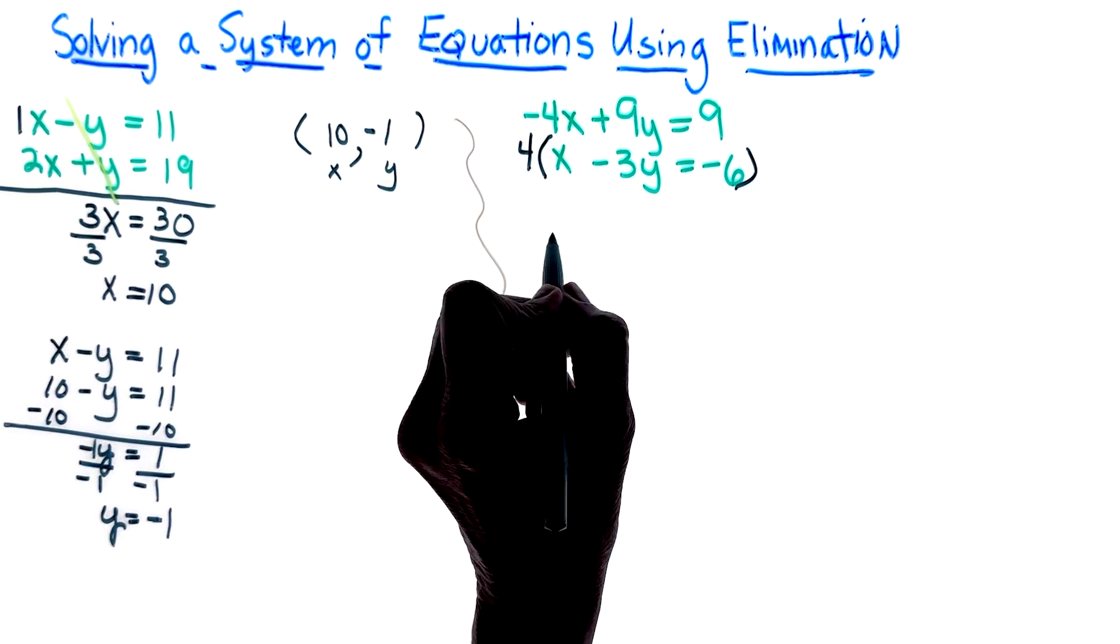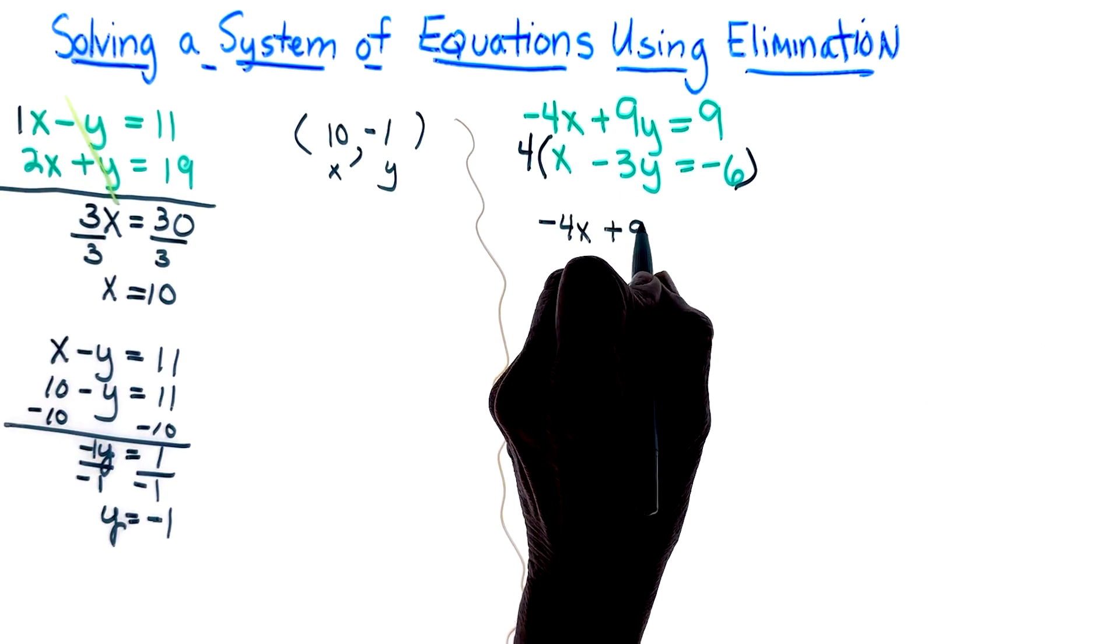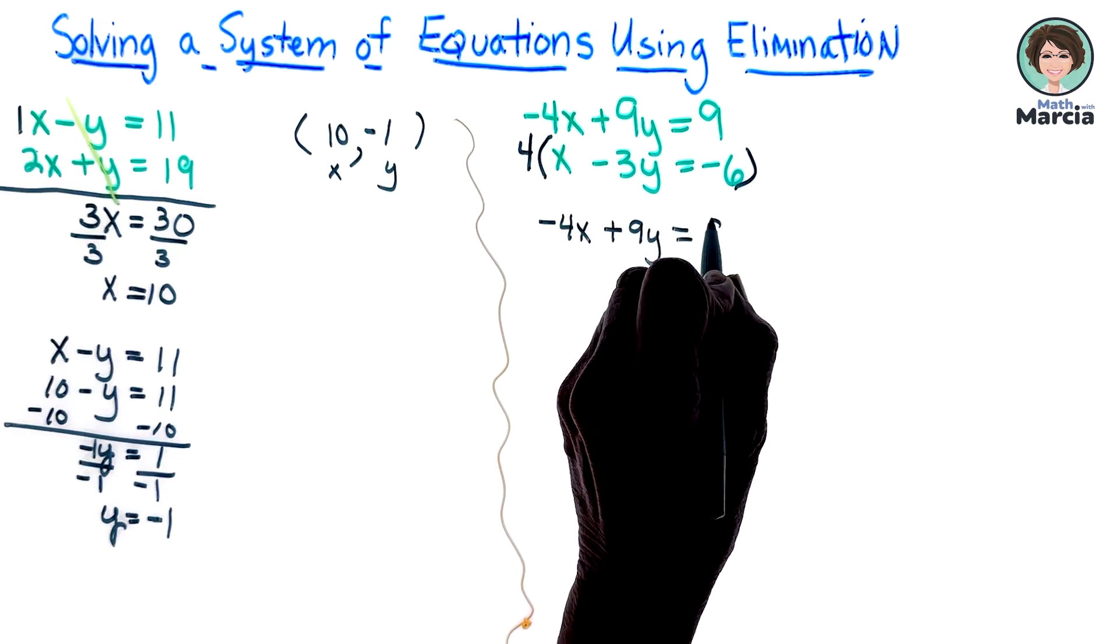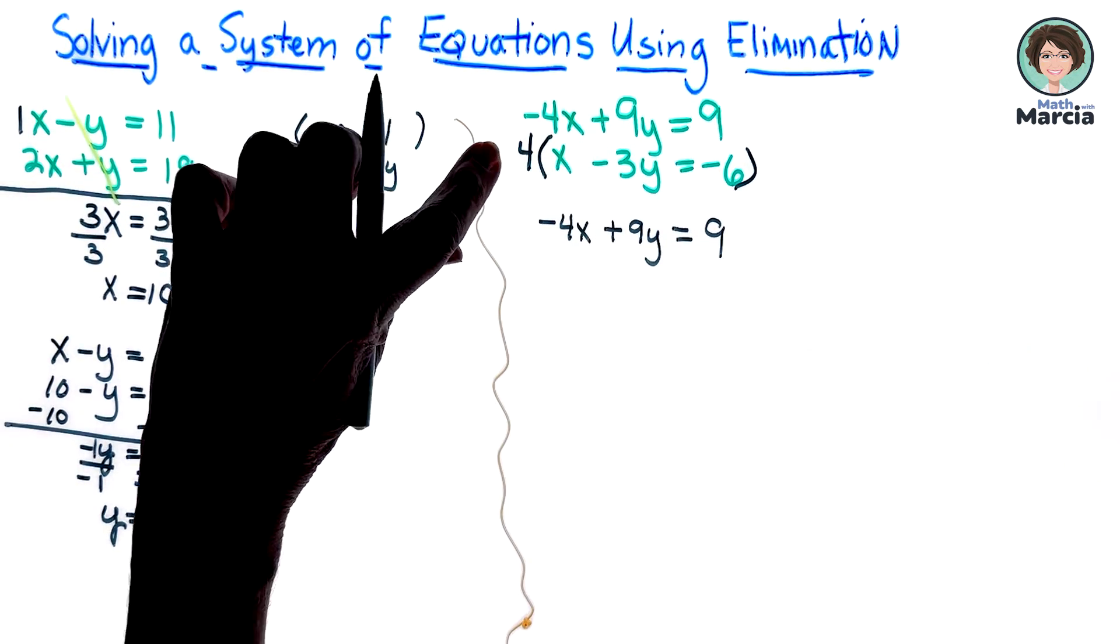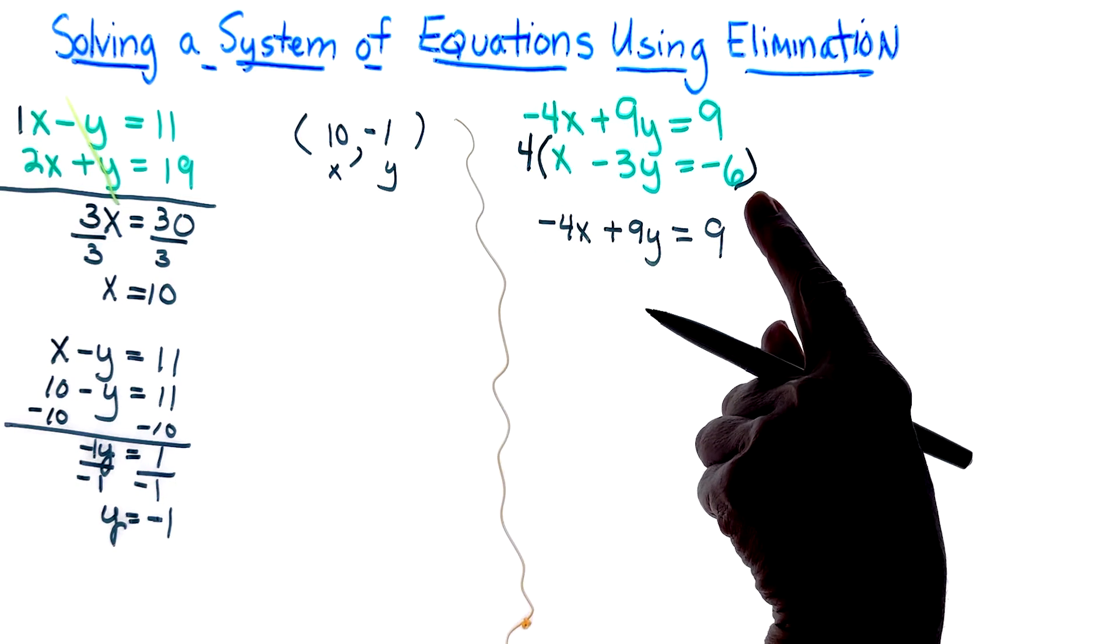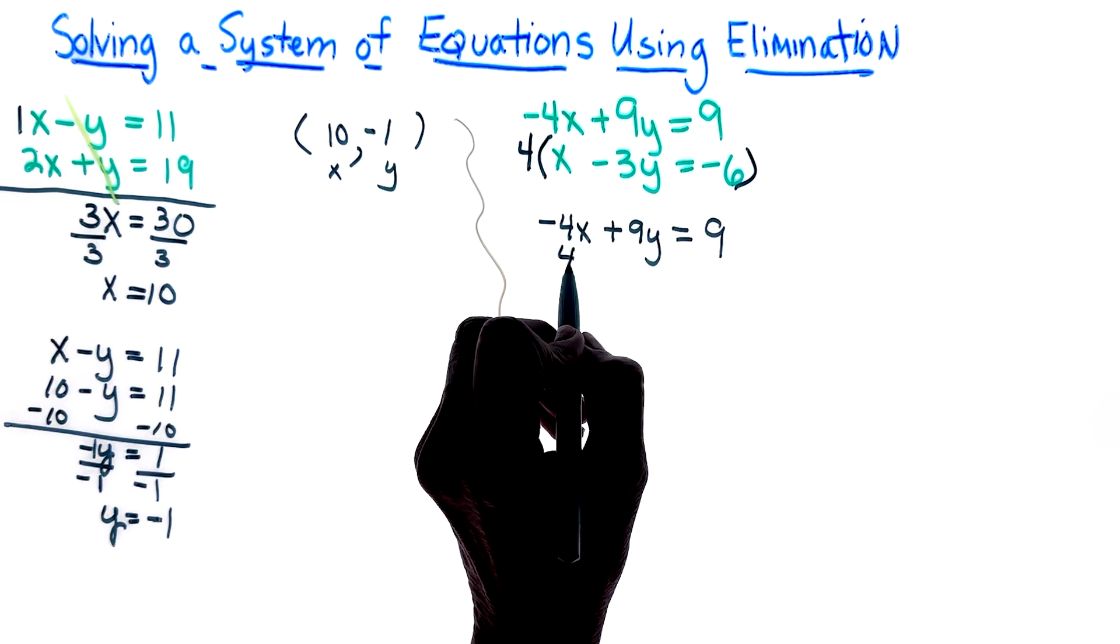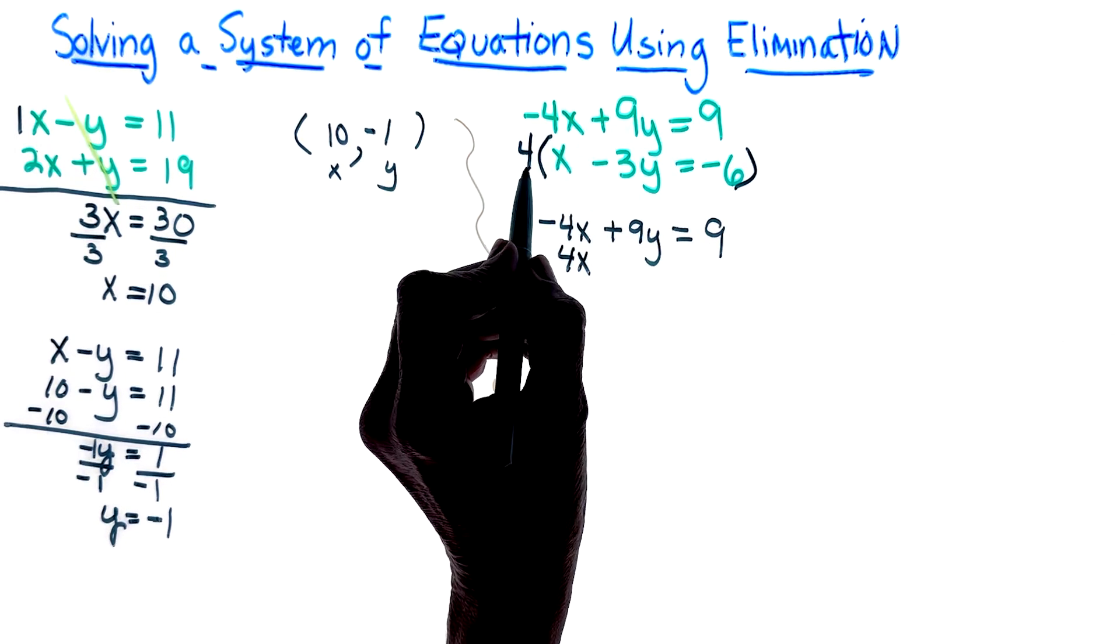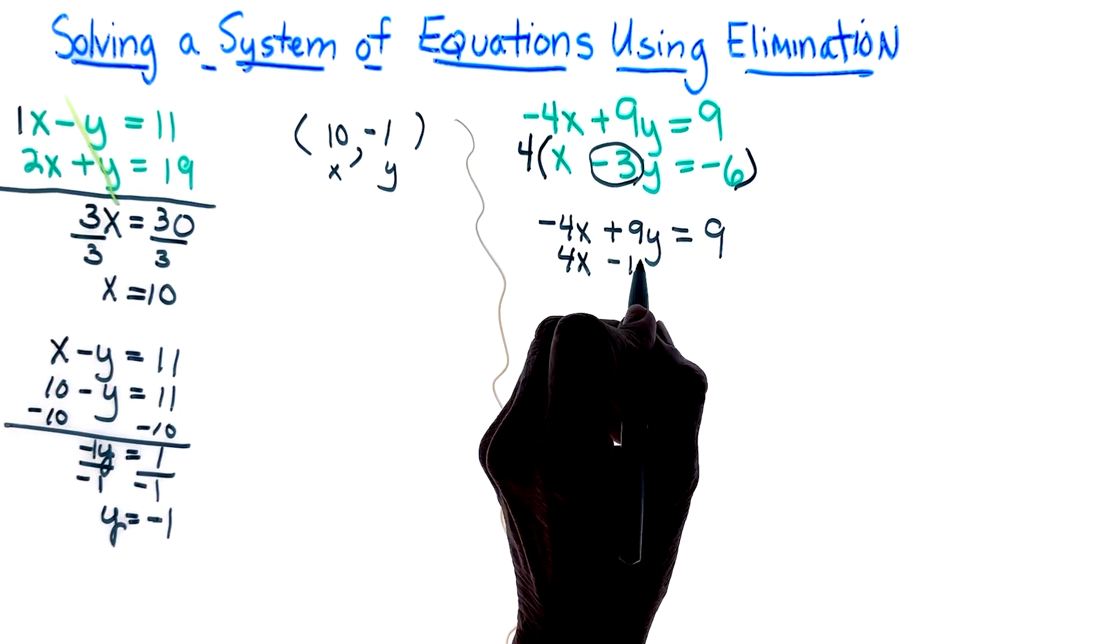So I am going to copy the first equation, negative 4x plus 9y equals 9. And now I'm going to do the multiplication of every term including that negative 6, you can't forget that guy. So it is 4x, 4 times negative 3 is negative 12y.